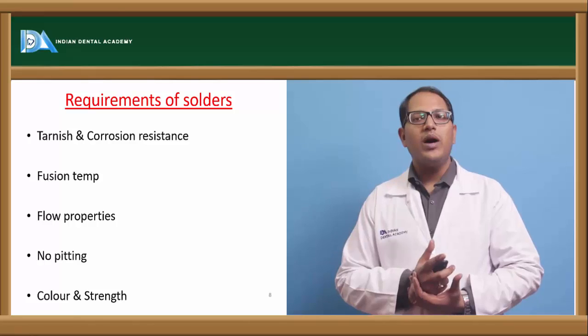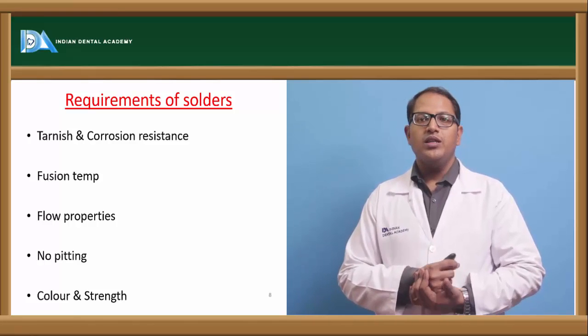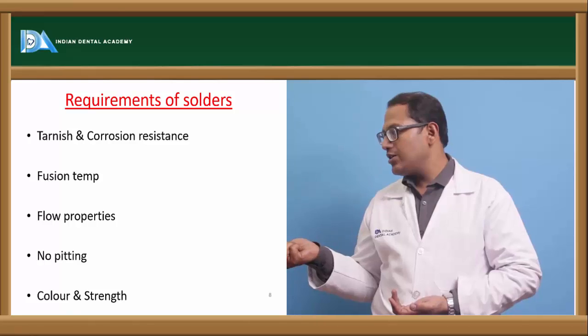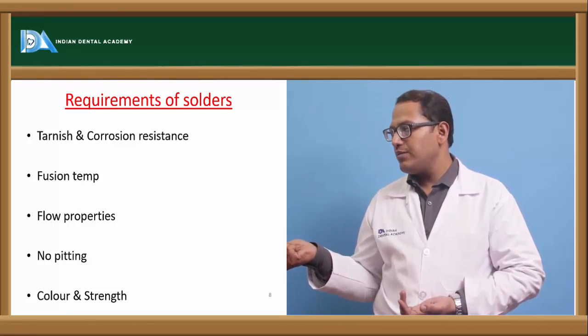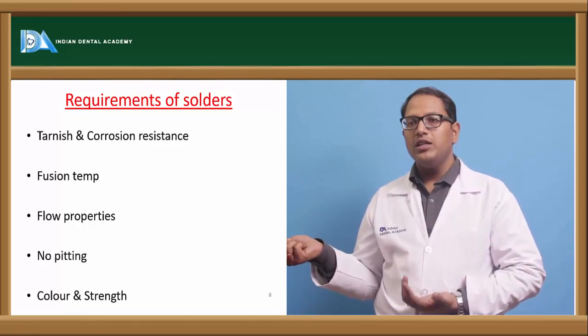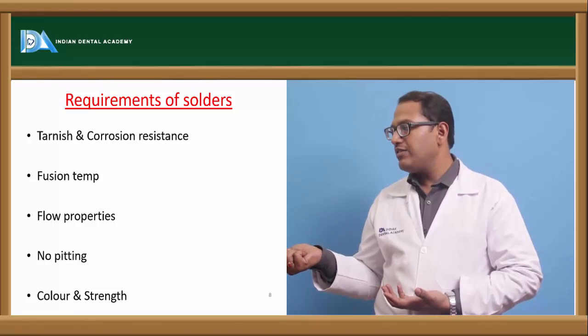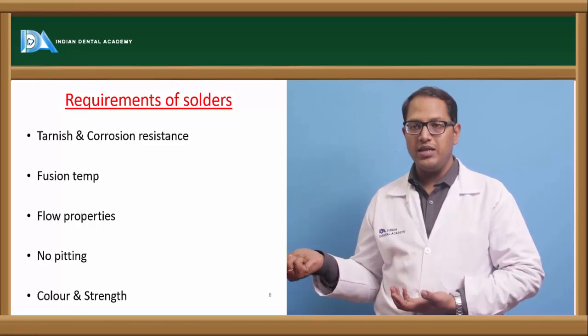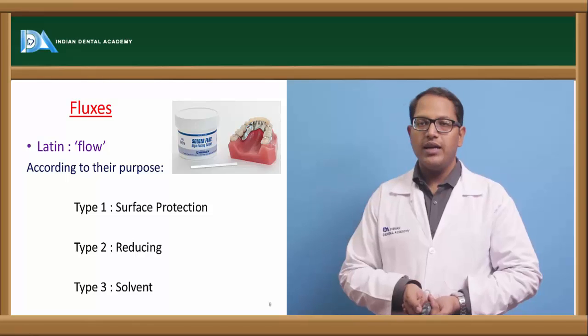Now let's see what are the requirements of a solder. The requirements of solders are it should be tarnish and corrosion resistant, the fusion temperature should be good, the flow properties should be great enough, there should be no pitting in the material, and it should have color and strength.